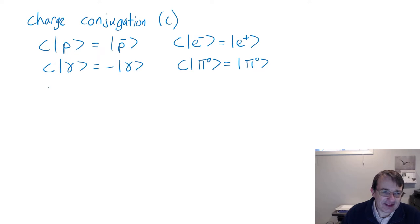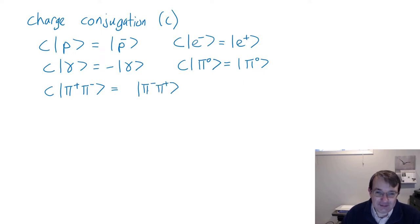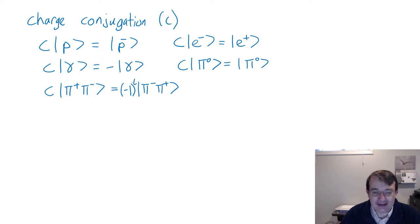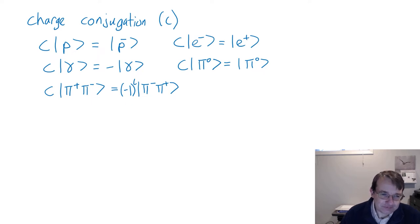Even though individual particles may not be eigenstates, we can look at charge conjugation operating on multi-particle states. If we operate charge conjugation on a state of pi-plus pi-minus, we end up with pi-minus pi-plus — the same two particles. The eigenvalue here is minus one to the power L, where L is the angular momentum magnitude of the pi-plus pi-minus state. If they're in the ground state with L equals zero, the eigenvalue is simply plus one.